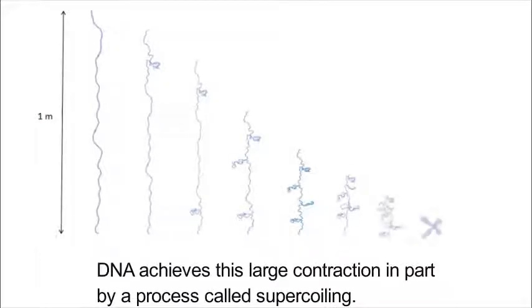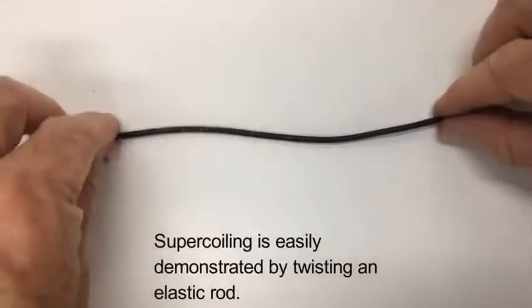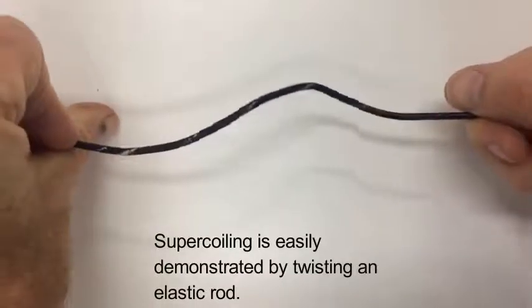DNA achieves this large contraction in part by a process called supercoiling. Supercoiling is easily demonstrated by twisting an elastic rod.